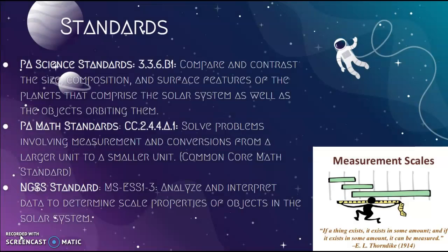The standards I went with for this unit include a PA science standard about comparing and contrasting the size, composition, and surface features of the planets that comprise the solar system as well as the objects orbiting them. The math standard — actually a fourth-grade math standard instead of sixth grade, which is what I would normally do — is about solving problems involving measurement and conversions from a larger unit to a smaller unit, so scale proportioning.